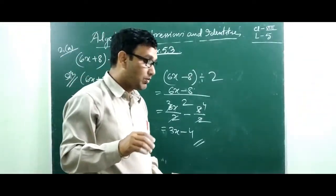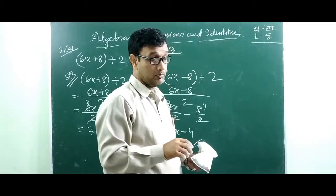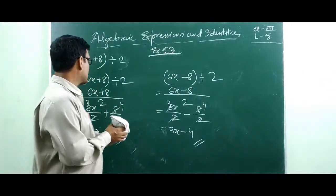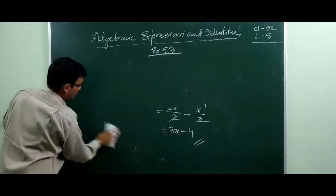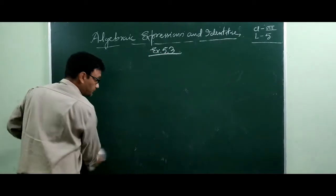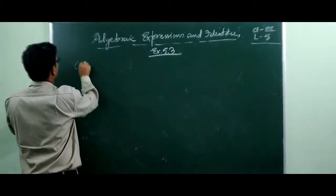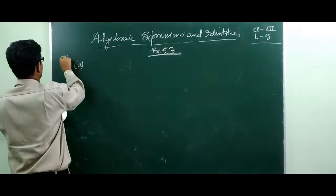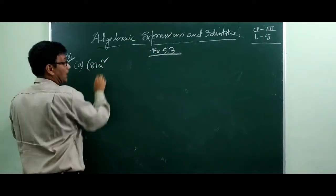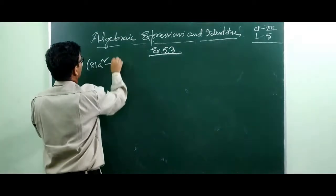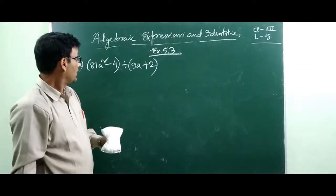Now see question number 3. Here binomial terms are divided by binomial terms, so this is a little bit tricky — try to understand it nicely. If your concept is clear you can solve it well. The first question given is: 81a squared minus 4 divided by 9a plus 2.